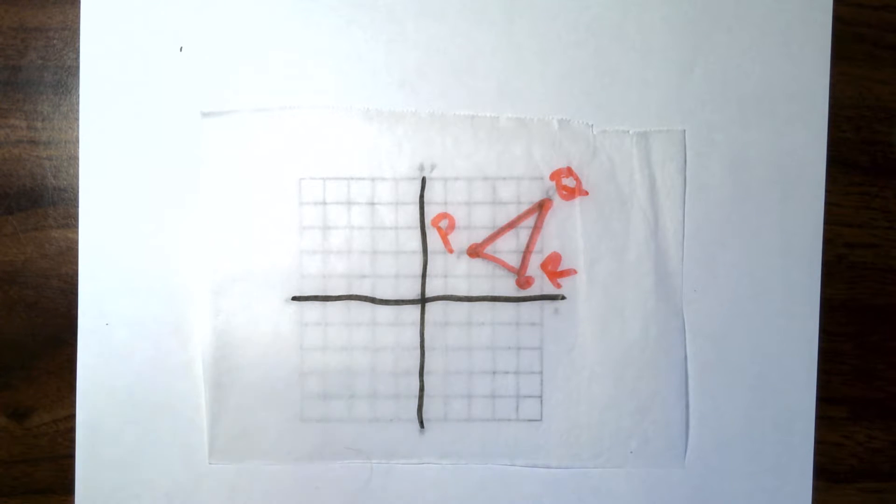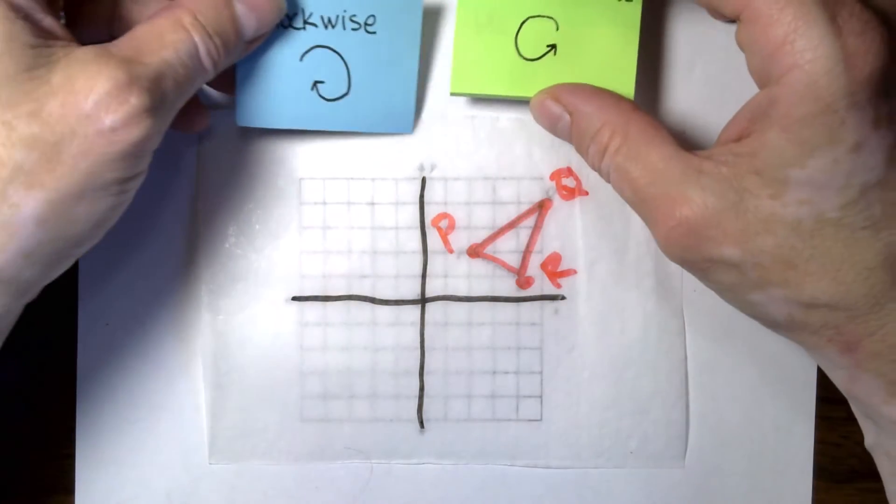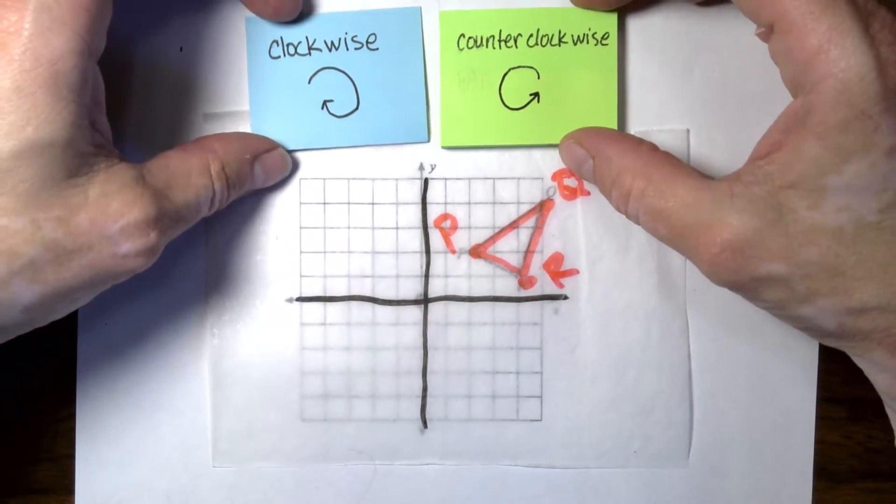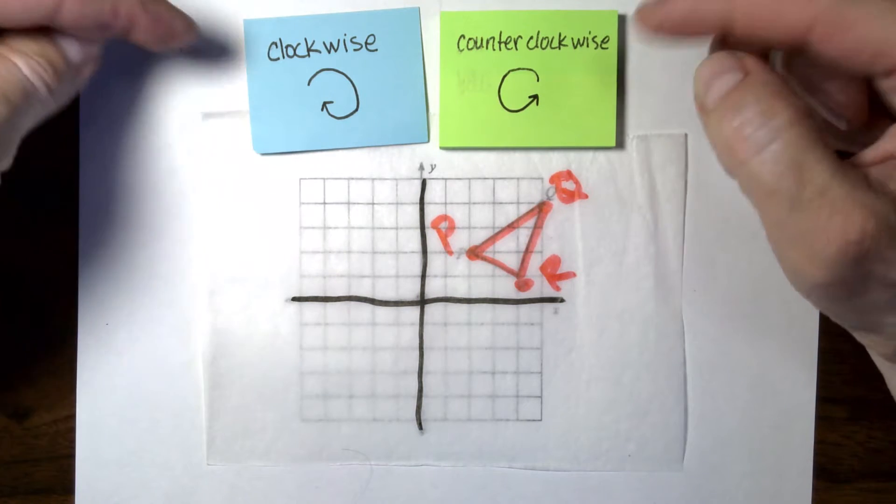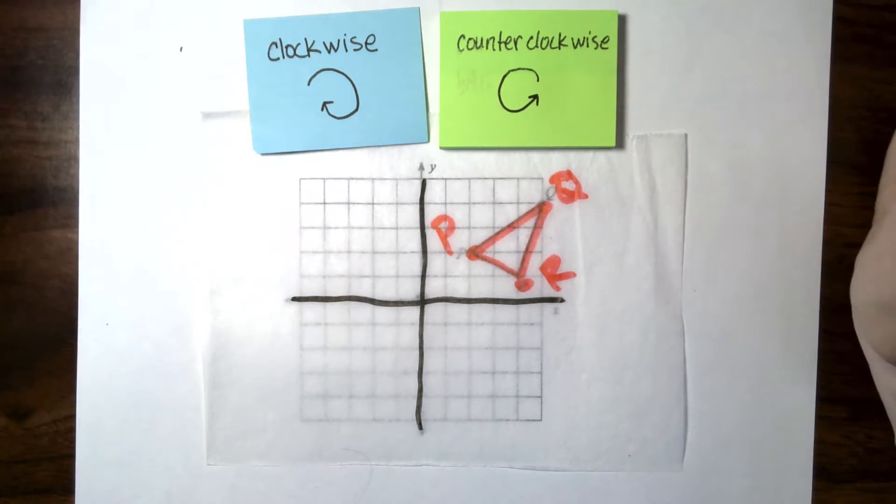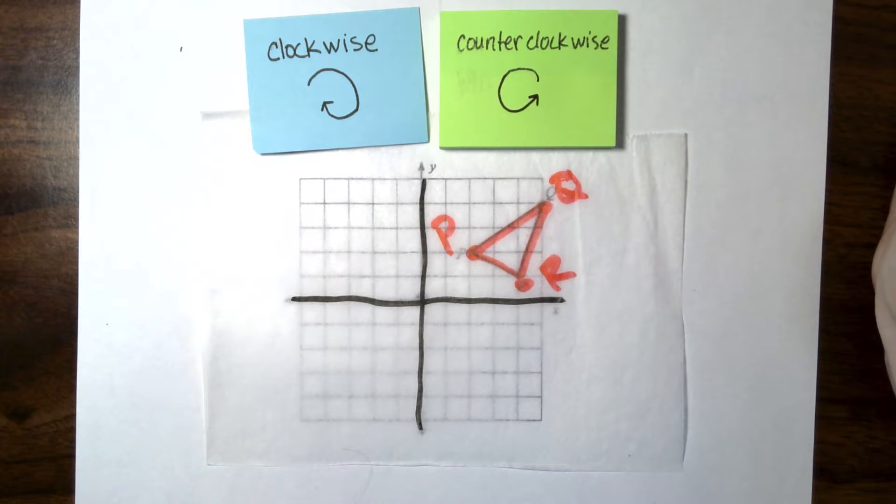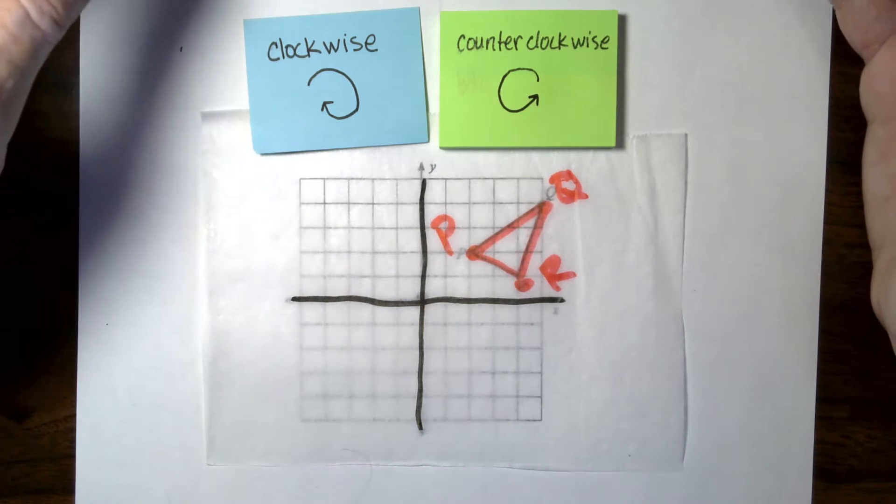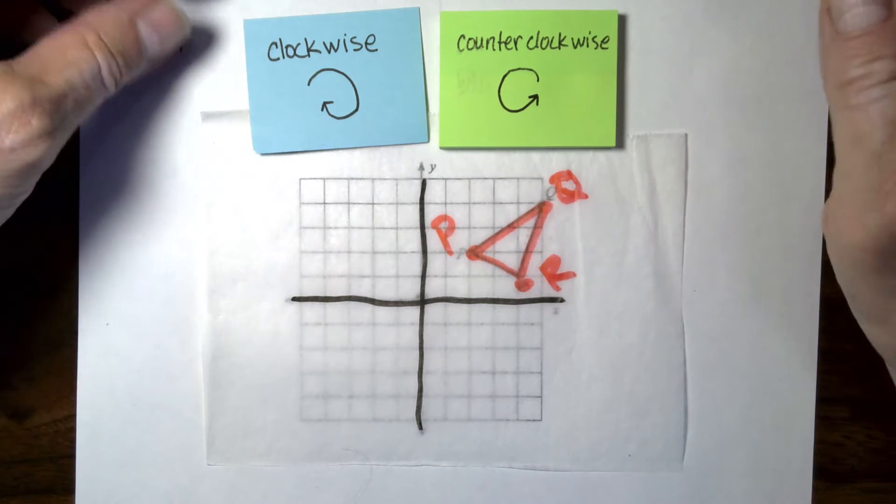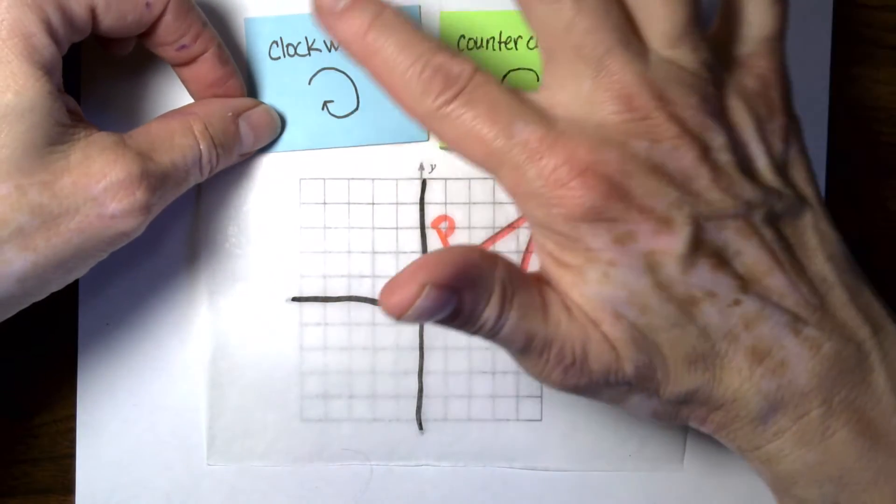All right. The first thing before we start getting into the problems is you need to know these things. You're going to be asked to move or rotate either clockwise or counterclockwise. Right now, I know a lot of students learned how to read a round clock, an analog clock.